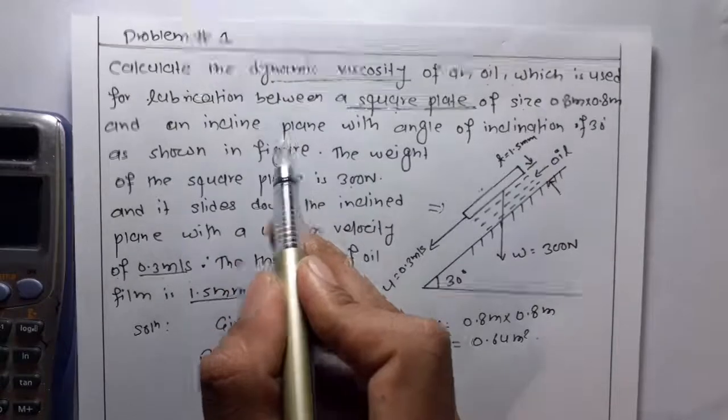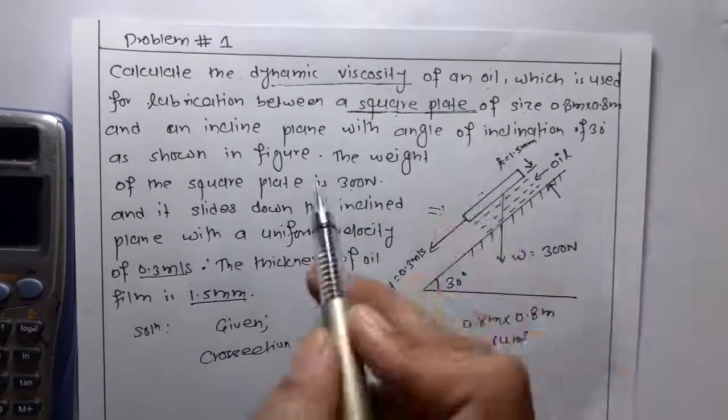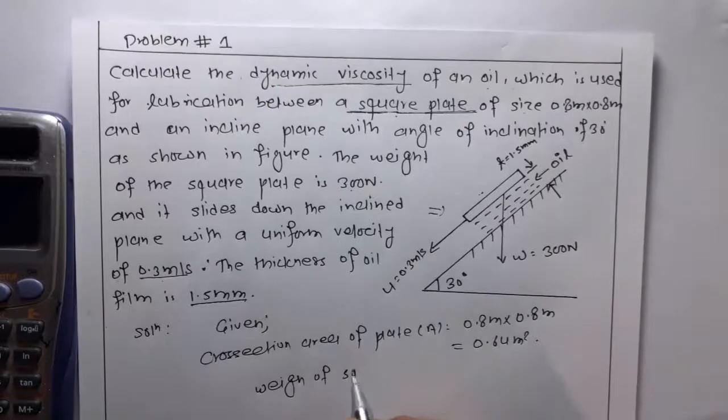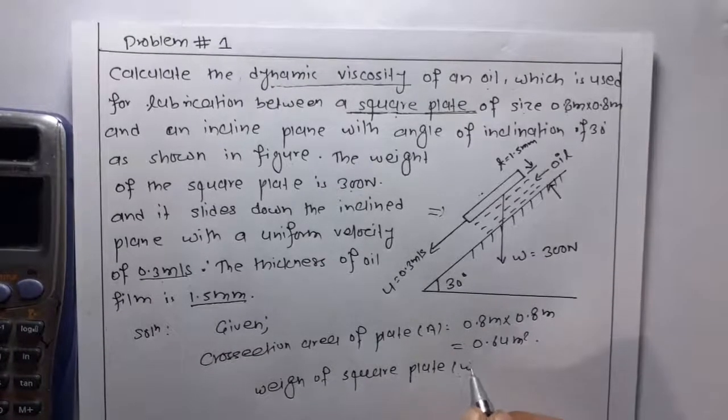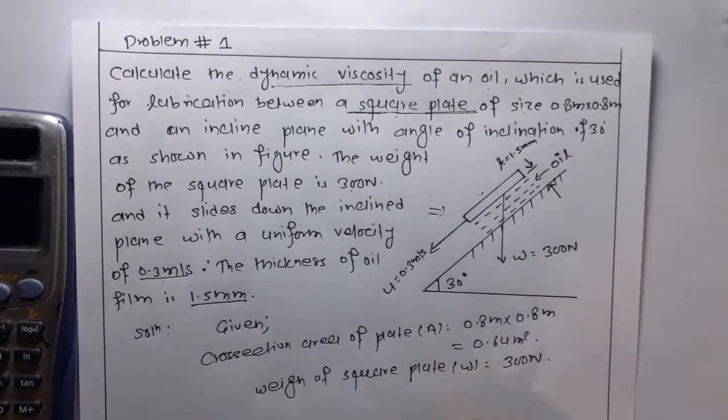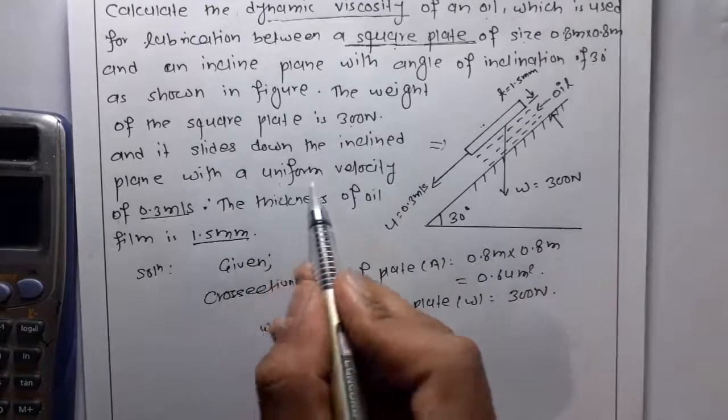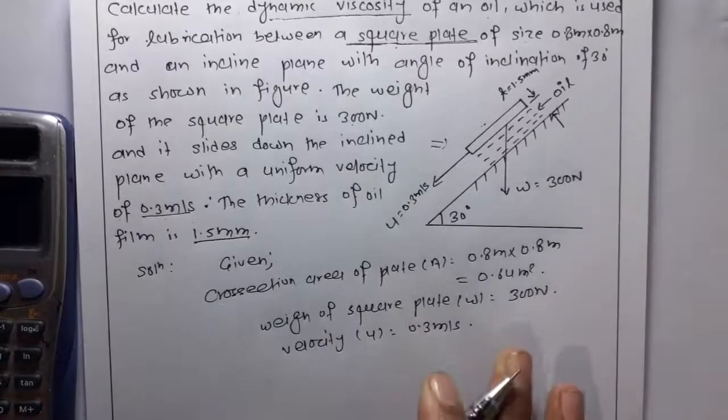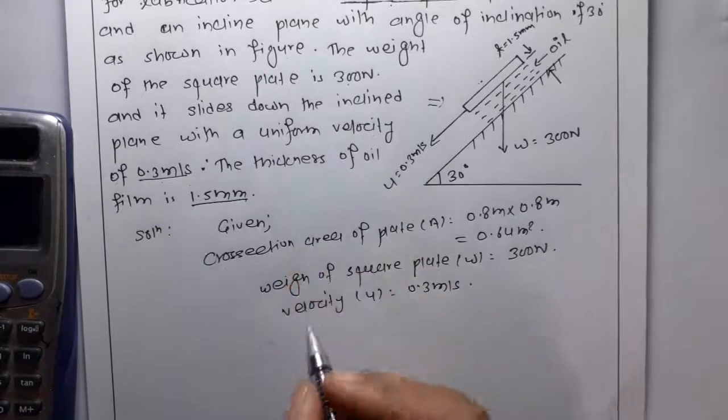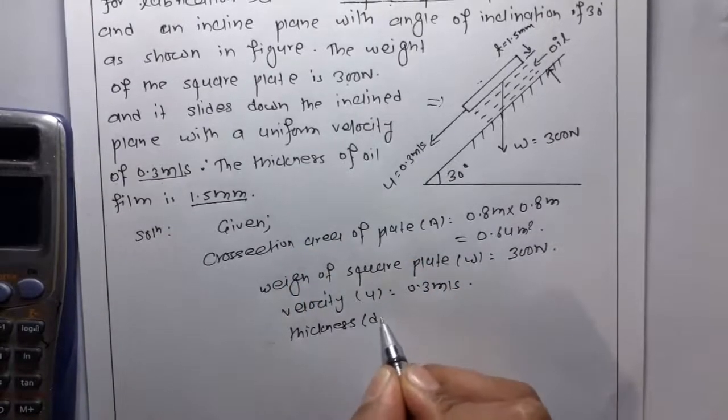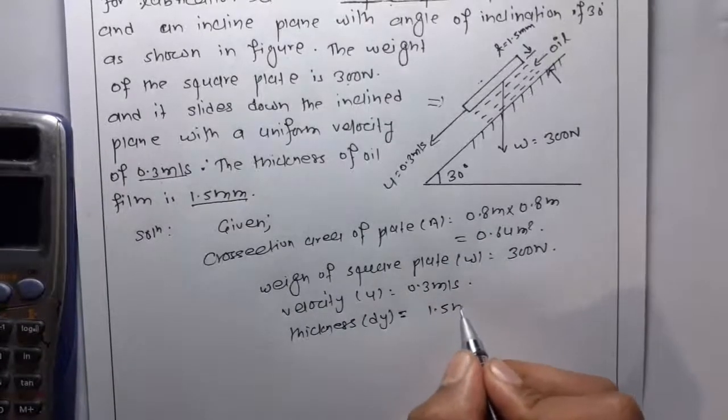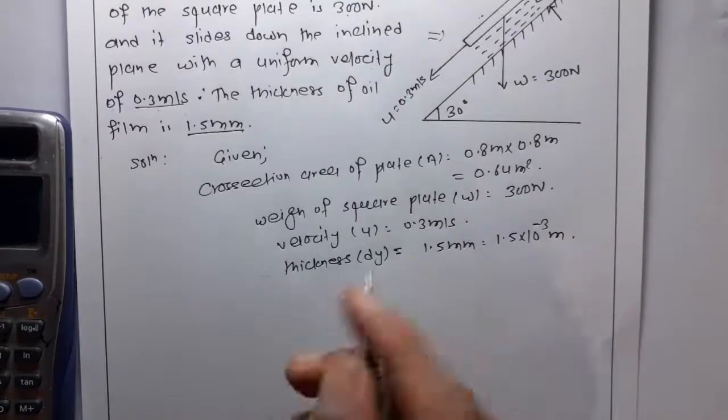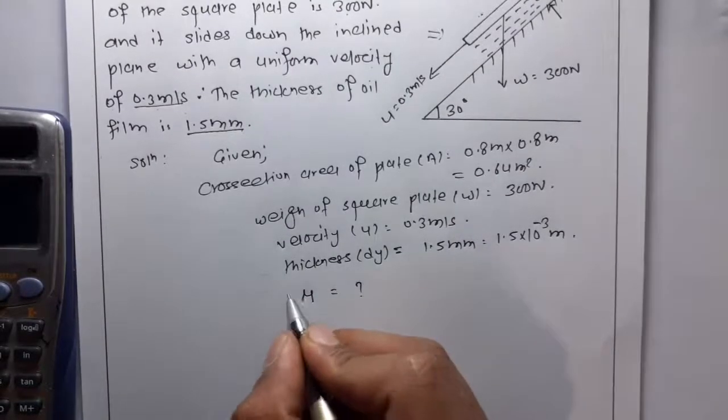And the inclined plane has an angle of inclination of 30 degrees. The weight of the square plate W is equal to 300 Newton, and velocity u is equal to 0.3 meters per second, and the thickness of oil film is 1.5 times 10 to the power minus 3 meters and we have to find dynamic viscosity.